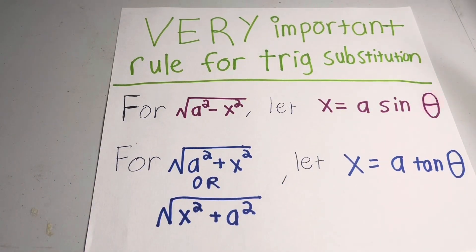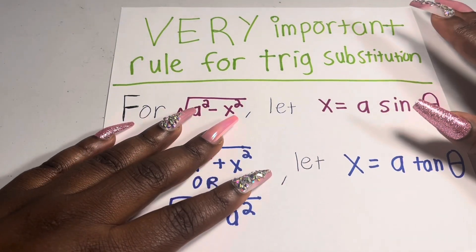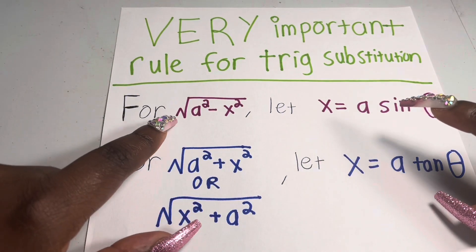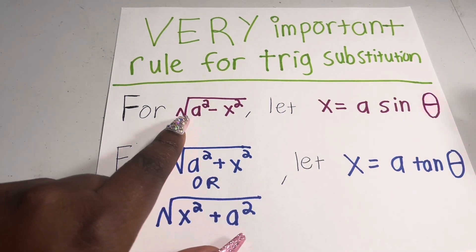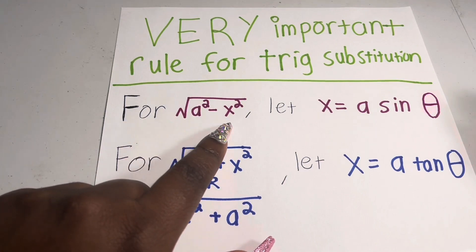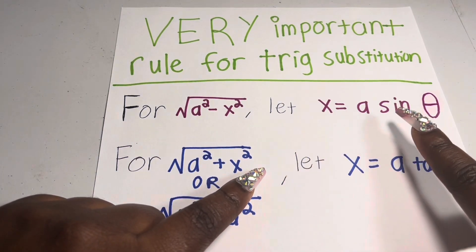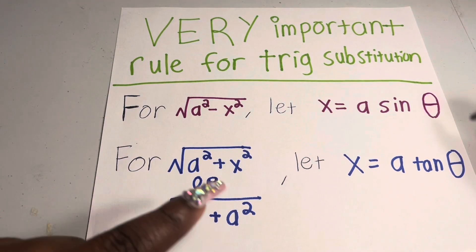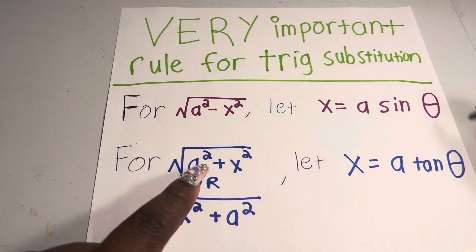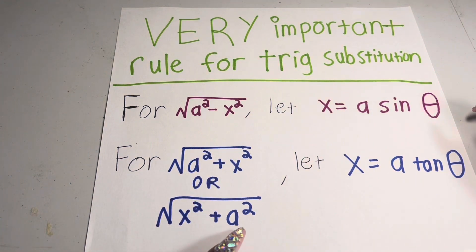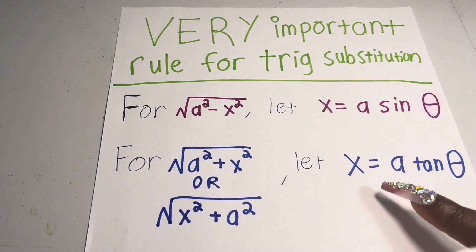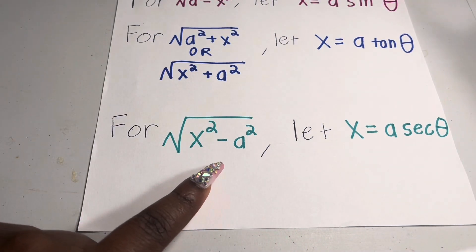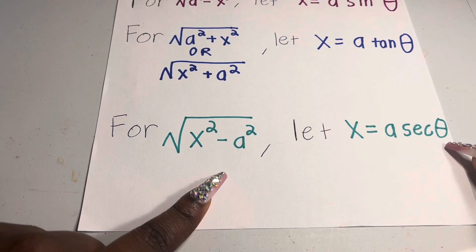Let's get into trig substitution. Before we start the examples, here is a very important rule. If you see the square root of a²−x² anywhere in the integral, let x = a sinθ. For the square root of x²+a² (or a²+x²), let x = a tanθ. And for the square root of x²−a², let x = a secθ.